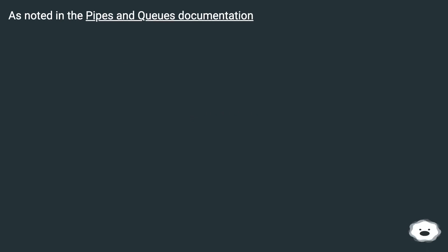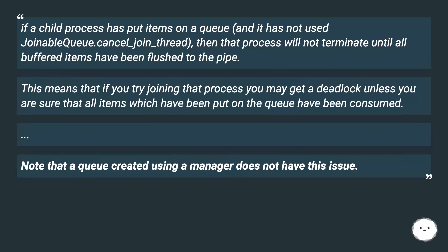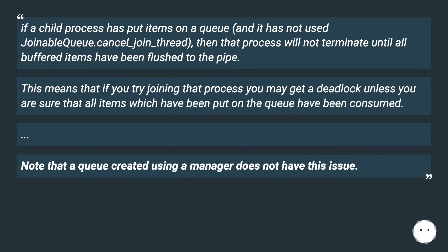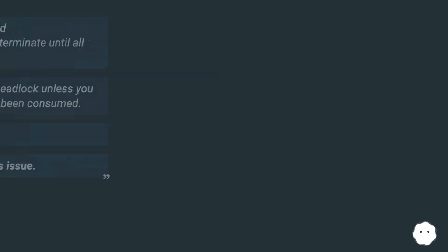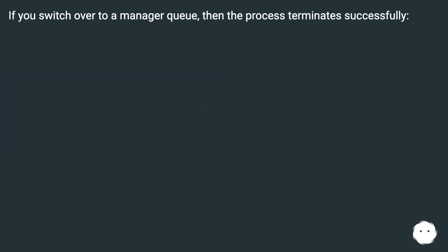As noted in the pipes and queues documentation: if a child process has put items on a queue and has not used JoinableQueue.cancel_join_thread, then that process will not terminate until all buffered items have been flushed to the pipe. This means that if you try joining that process you may get a deadlock, unless you are sure that all items which have been put on the queue have been consumed. Note that a queue created using a manager does not have this issue — if you switch over to a manager queue, then the process terminates successfully.